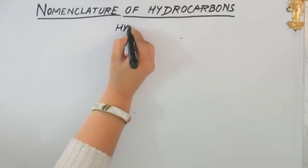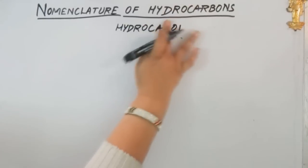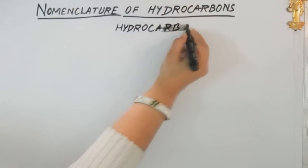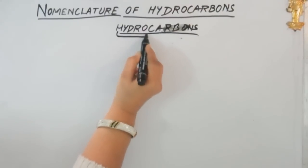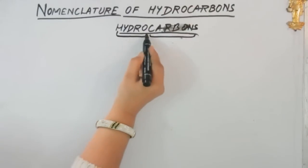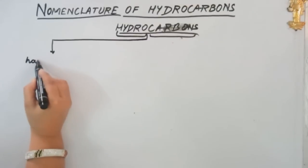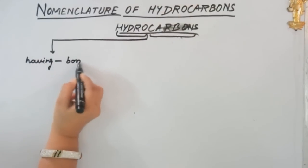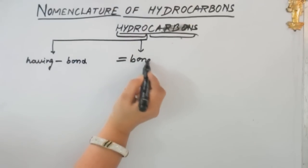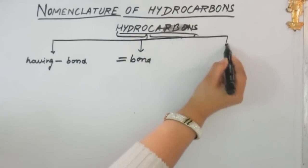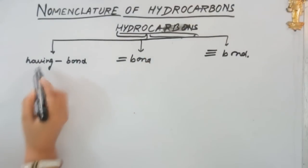Hydrocarbons, as the name indicates, are compounds having hydrogen and carbon in them. They are further classified as compounds having a single bond, compounds having a double bond, and compounds having a triple bond.